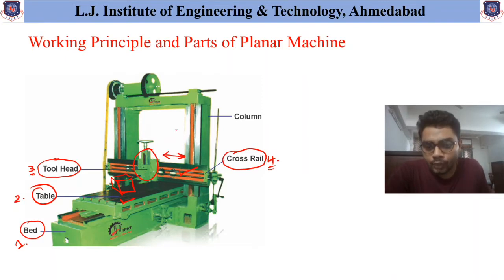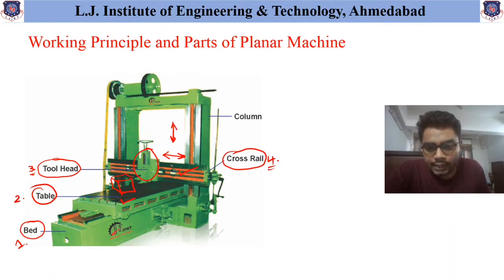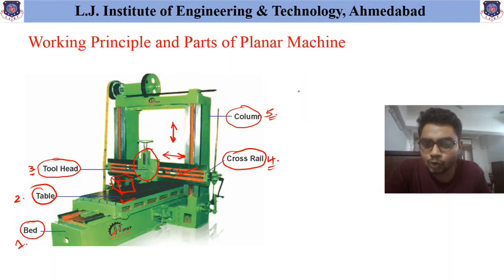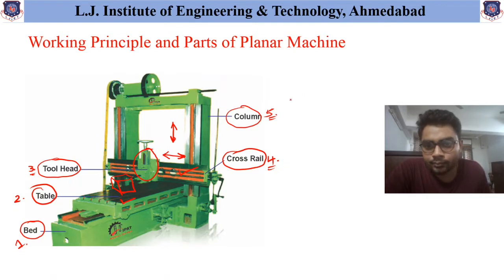To obtain the movement of the tool in the vertical direction, this entire cross rail needs to be moved in the upward and downward direction. For that movement, the next part provided is the column. This fifth part is called the column, which helps to obtain the vertical or up-and-down movement of the tool in the Planner Machine.